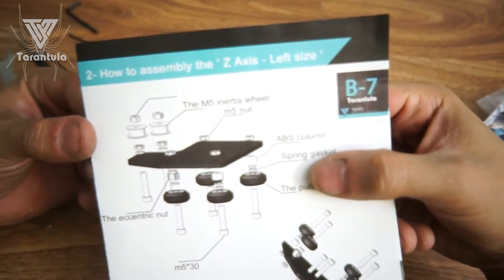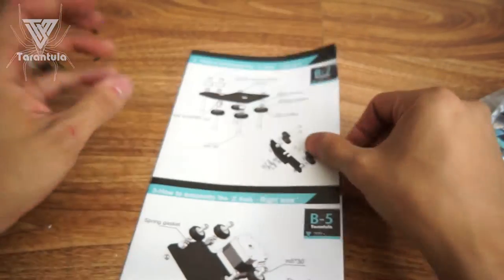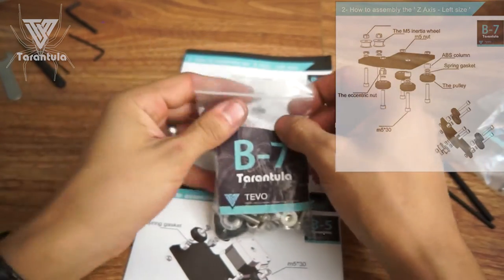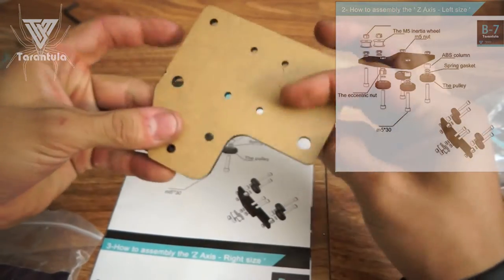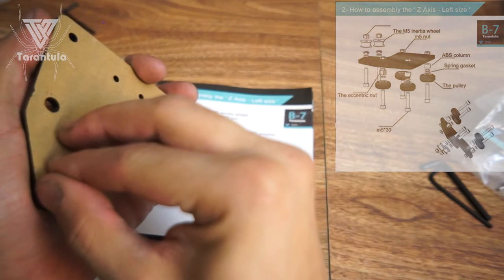How to assemble the Z-axis left side. Alright, here we go. We need B7, 5 before 1, before 2, B7, and we need this acrylic piece here. Let's try and remove this paper.